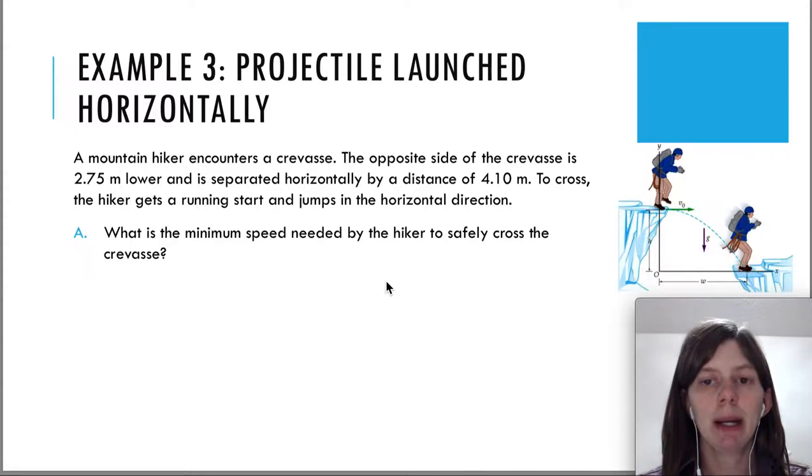The mountain hiker encounters a crevasse. The opposite side of the crevasse is 2.7 meters lower and is separated horizontally by a distance of 4.1 meters. To cross, the hiker gets a running start and jumps in the horizontal direction. What's the minimum speed needed by the hiker to safely cross the crevasse?